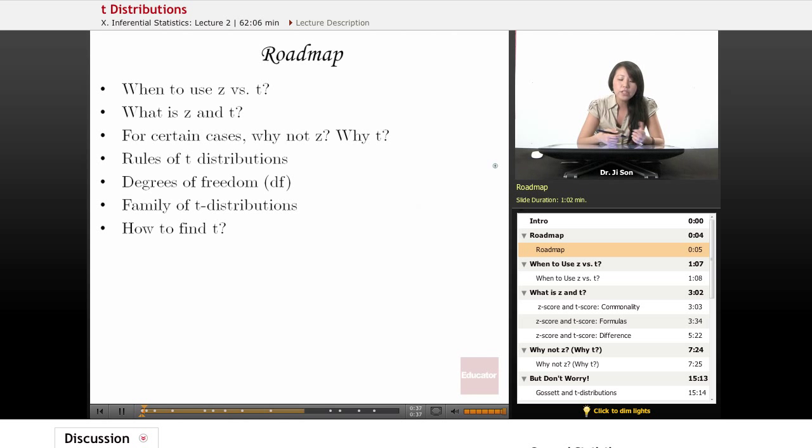We're going to talk about rules of T distributions. They follow certain patterns. T distributions are a family of distributions separated by degrees of freedom. Different T distributions have different degrees of freedom. We're going to talk about what is degrees of freedom and how degrees of freedom relates to that family of T distributions. And then finally summarize how to find T.